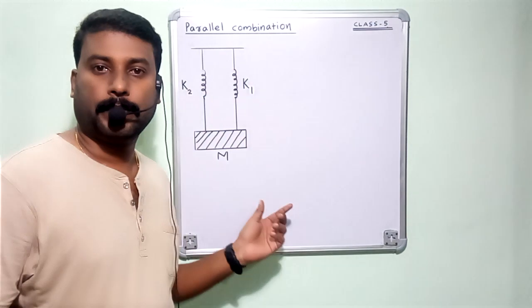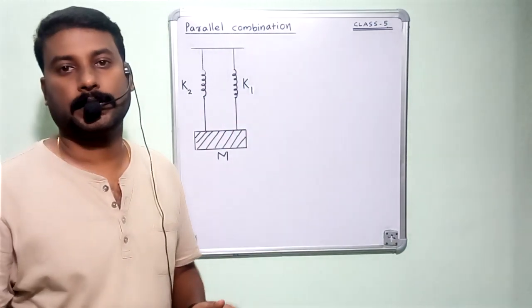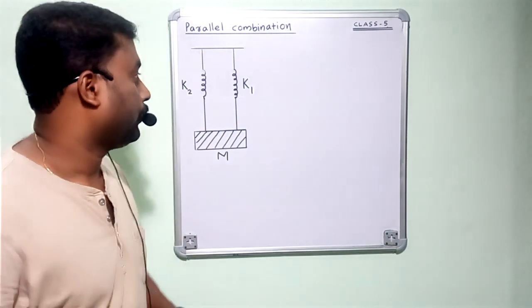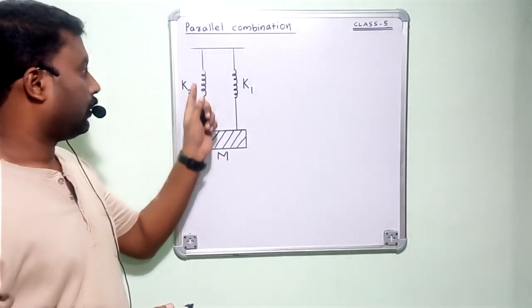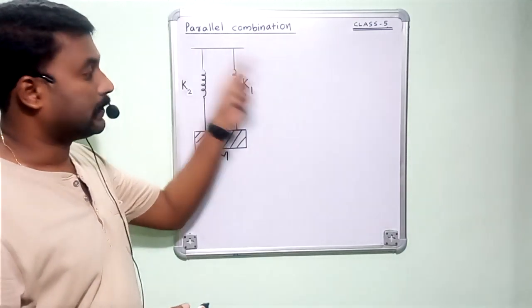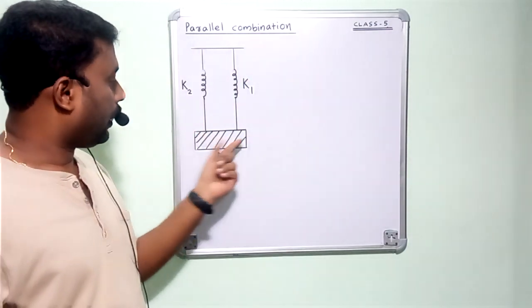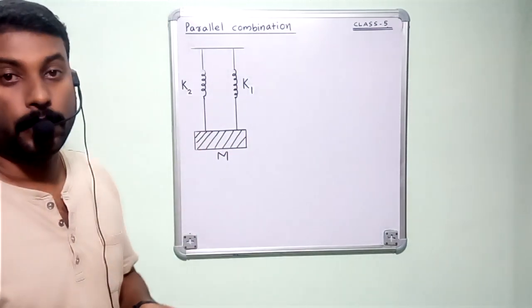Consider a body of mass M is suspended using two springs of spring constants K1 and K2. This combination is parallel combination because each end of these two springs are connected to a rigid support and the other ends are connected to a body of mass M.